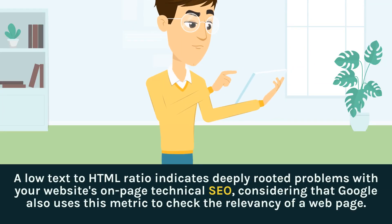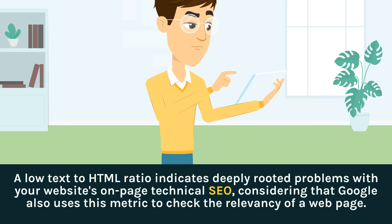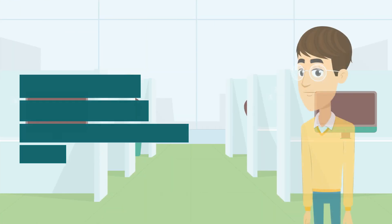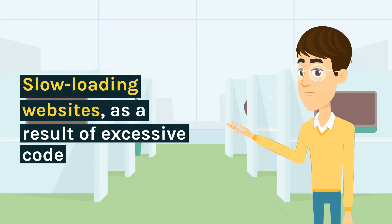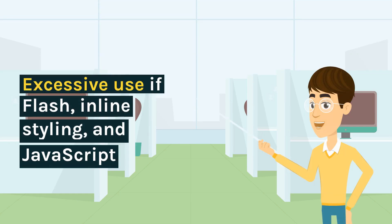A low text to HTML ratio indicates deeply rooted problems with your website's on-page technical SEO. Considering that Google also uses this metric to check the relevancy of a web page, low ratios could indicate: slow loading websites as a result of excessive code, hidden text which is a red flag for search bots, and excessive use of Flash, inline styling, and JavaScript.